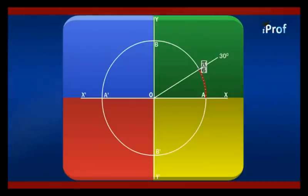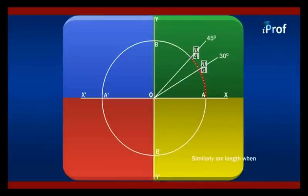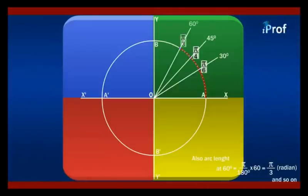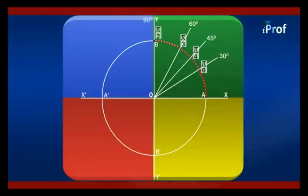If we move further to the position where the angle is 45 degrees, the arc length will be equal to π/4. When we take 60 degrees, this arc length will be equal to π/3. At 90 degrees, it will be equal to π/2 radians.